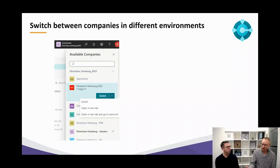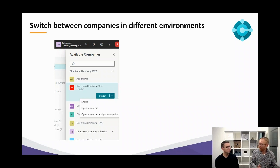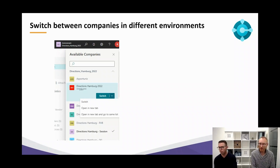You can not only switch between companies, but you can switch between environments as well. So you can switch between your production environment and your sandbox environment. But besides that, you can switch between production environments — for instance, you have an entity in the Netherlands and a German entity as well, so you can switch between those entities. Very powerful for doing some kind of intercompany processing. It makes it much easier to navigate between companies and will save a lot of clicks.